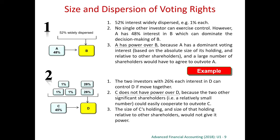Because the other 2 significant shareholders can cooperate, C cannot always win. In order to say that you have the power, you must always win. Therefore, in this situation, we cannot say that C has got the power over D.